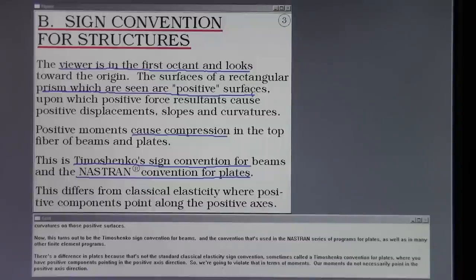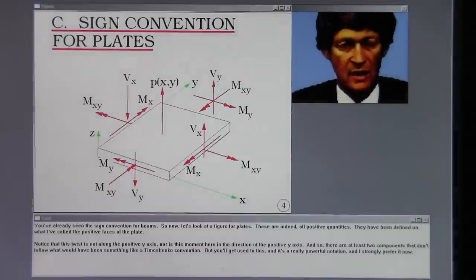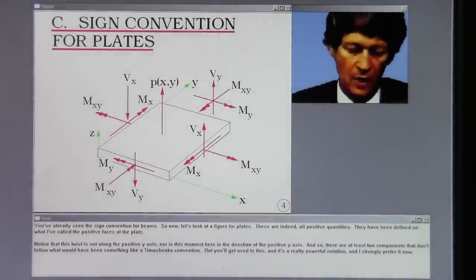There's a difference in plates because that's not the standard classical elasticity sign convention, sometimes called the Timoshenko convention for plates, where you have positive components pointing in the positive axis direction. So we're going to violate that in terms of moments. Our moments do not necessarily point in the positive axis direction. You've already seen the sign convention for beams, so now let's look at a figure for plates.